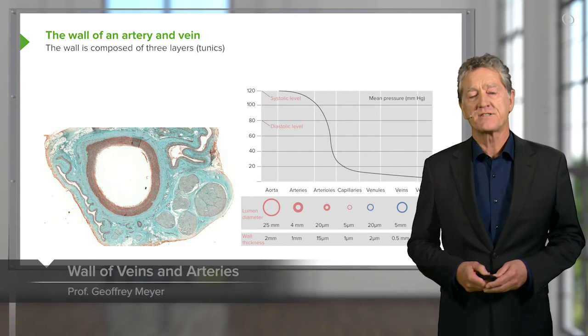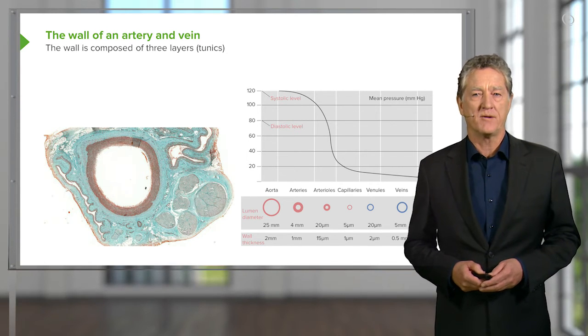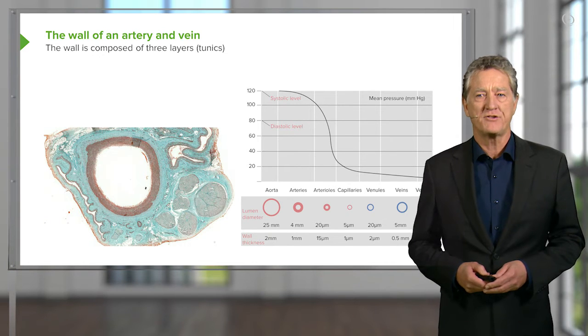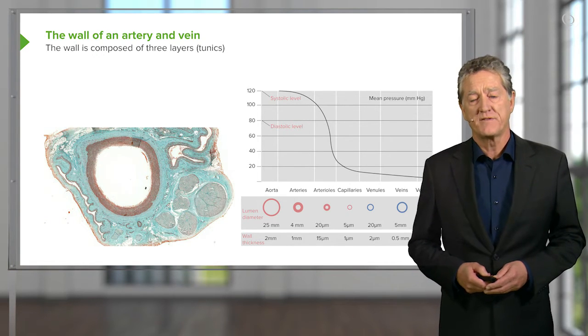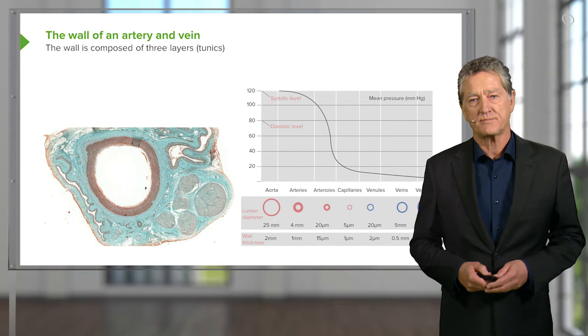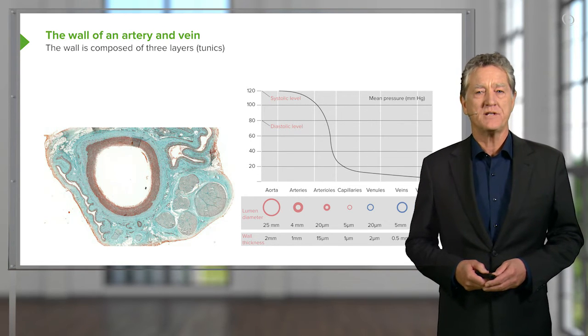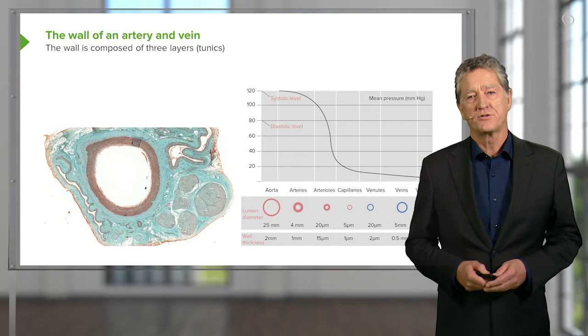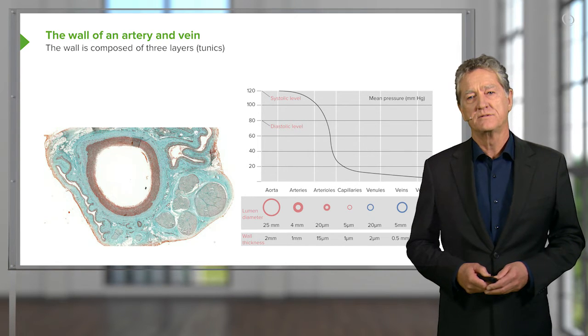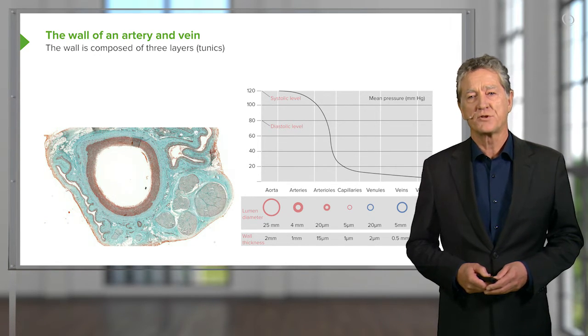On the right-hand side of this slide, you can see a diagram illustrating the mean pressure within these vessels as they pass from the aorta down to a capillary bed, then into small venules, and then into veins to be returned to the heart.